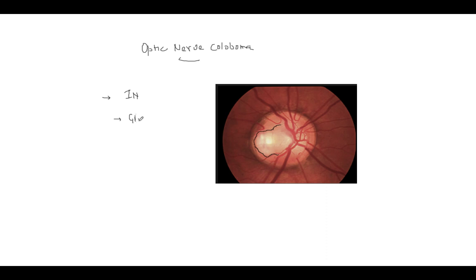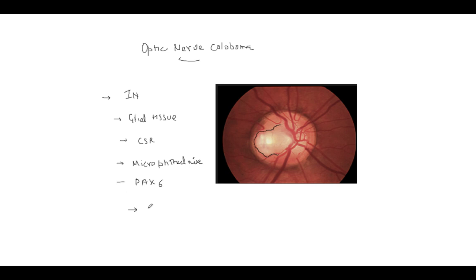There is a lot of white tissue seen — glial tissue fills the defect. The complications can be central serous retinopathy and serous retinal detachment. Associations include microphthalmia and a PAX6 association. The systemic syndrome associated with optic nerve coloboma is papillorenal syndrome. These are the important points to remember regarding optic nerve coloboma.